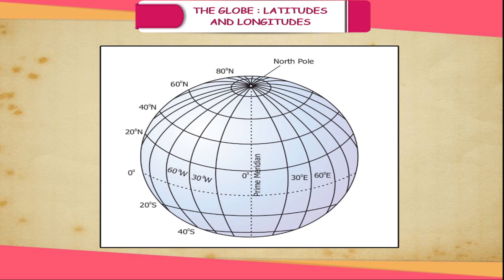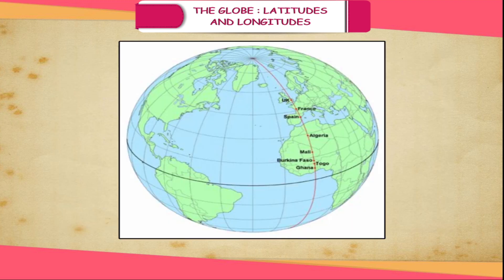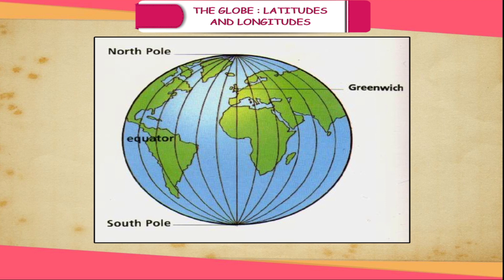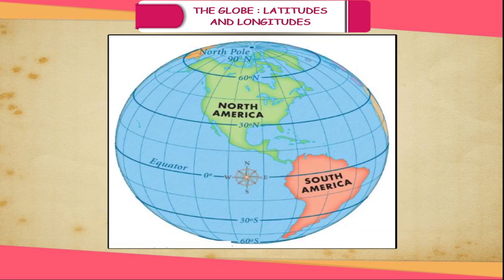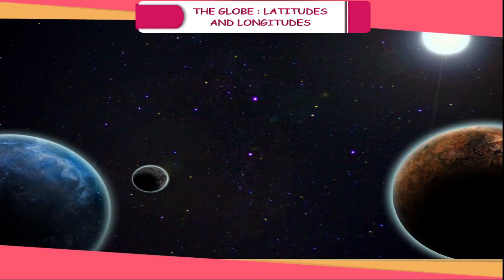Grid: The parallels alone cannot be used to locate a place. The parallels and meridians form a grid of intersecting lines on the globe or on a map. The parallels help us to locate a place north or south of the equator; the meridians do the same east or west of the prime meridian. The point of intersection of these lines gives the precise location of a place.